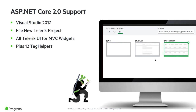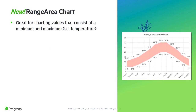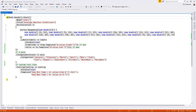This release marks a milestone for ASP.NET Core 2 support. This means all of the widgets for ASP.NET MVC, including what you see in the webinar today, also work on .NET Core 2. Not only does Telerik UI for ASP.NET Core support ASP.NET Core 2 along with .NET Standard 2, we've also included file new project templates for kicking off your project with Telerik UIs already configured, and a variety of tag helpers which are only available to ASP.NET Core. The brand new range area chart was added in this release, helping visualize data that has corresponding minimum and maximum data points.